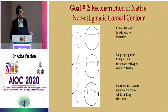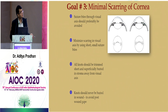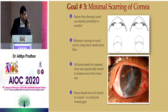To restore normal globe contour: the cornea must be flattened in the axis perpendicular to the laceration. In the periphery, give longer compression sutures so the central curvature becomes steep and the periphery remains flat. In the center, give shorter sutures so the cornea opposes well and contour is maintained. Minimize scarring by avoiding sutures in the visual axis, and knots should never be buried in the wound.